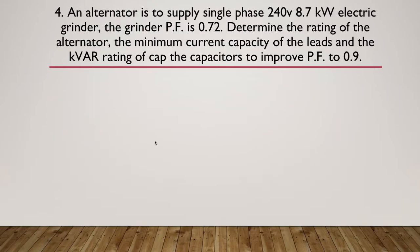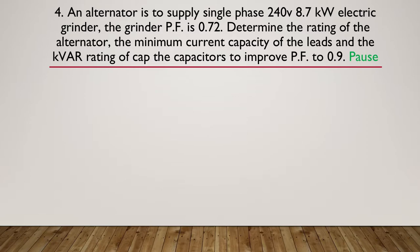Question four: an alternator is to supply a single phase 240 volt, 8.7 kilowatt electric grinder. The grinder's power factor is 0.72. We need to determine the rating of the alternator, the minimum current carrying capacity of the leads, and the kVAR rating of the capacitor to improve the power factor to 0.9. Pause here — you may need to pause while you do some maths.